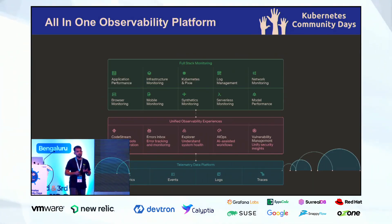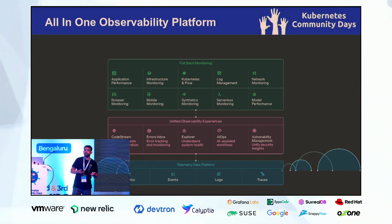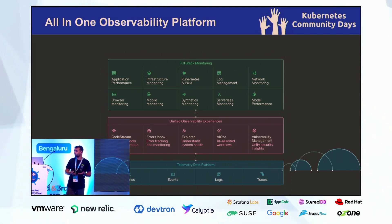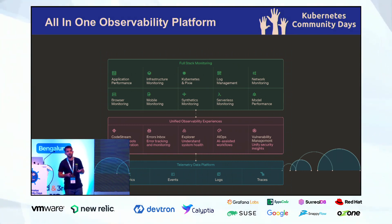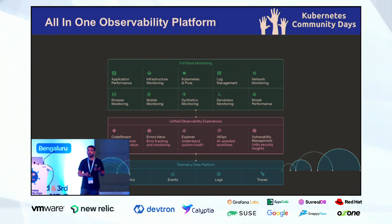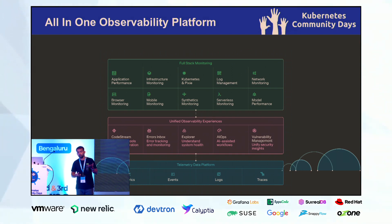What is New Relic? New Relic is an all-in-one observability platform. We support application performance, infrastructure monitoring, Kubernetes, log management, and many other capabilities. We have over 30 plus capabilities that you can start using, and it's all for free.